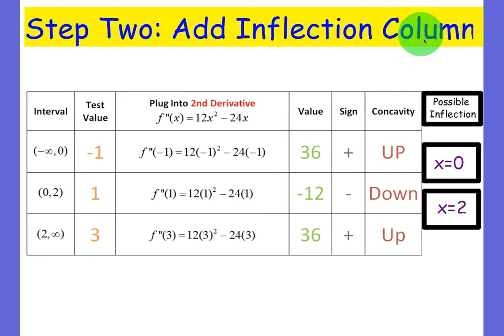This leads us to step two, which is add an inflection column. Just like when we had relative min and max for our increasing-decreasing table, we will now have a new column where there are possible points of inflection. And it's pretty simple. Here we can see it goes from concave up to concave down. So we're going to add a new place here and we can see the value that they share is zero.